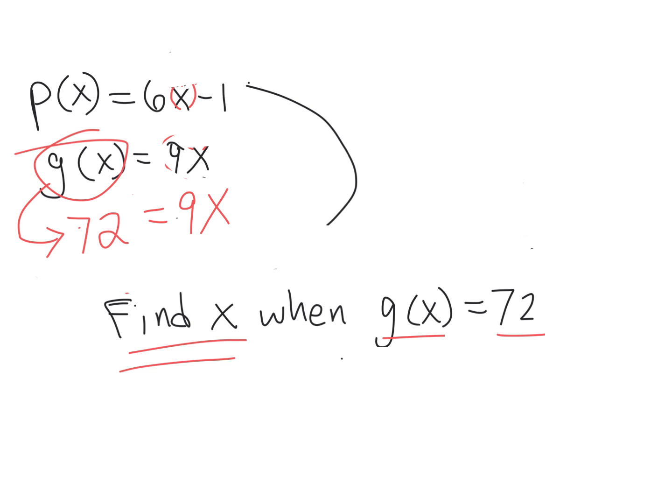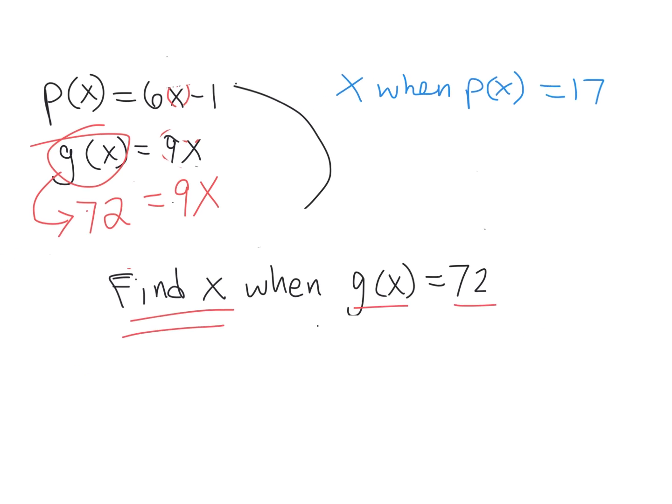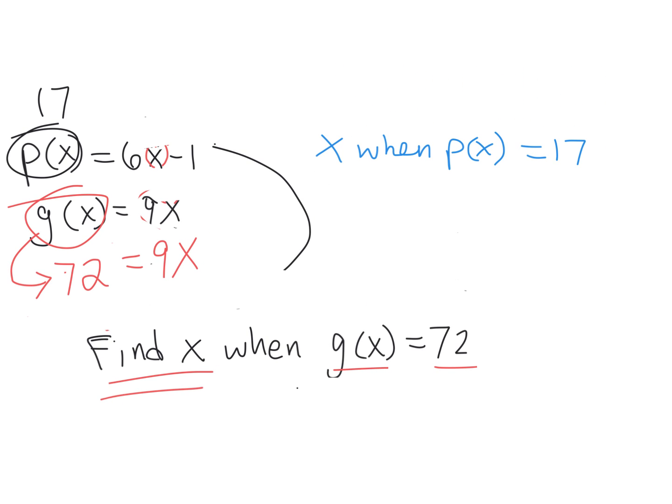Let's do one like that. Find X when P of X is 17. Don't put 17 into X. Find P of X. I found P of X. It's right here. And replace it with 17. 17 equals 6X minus 1. Then I add 1 to both sides. 18 equals 6X. X must be 3.